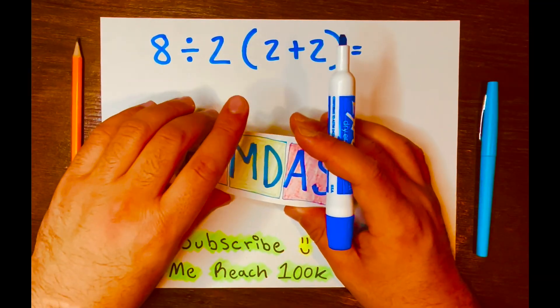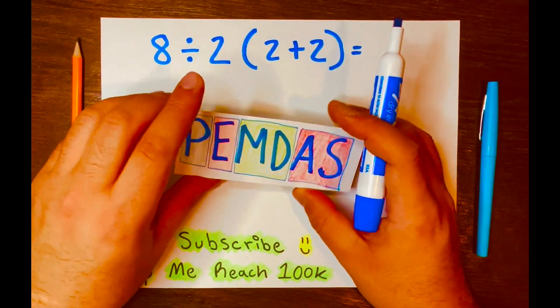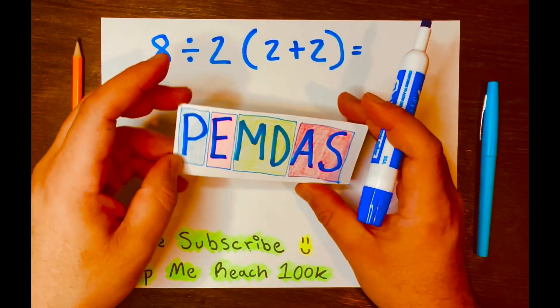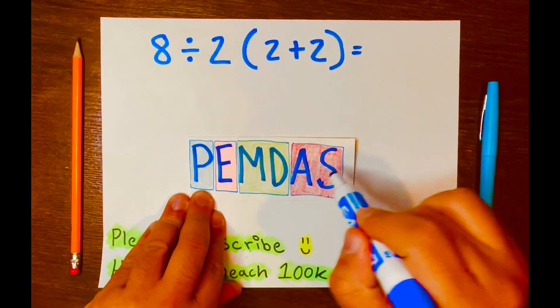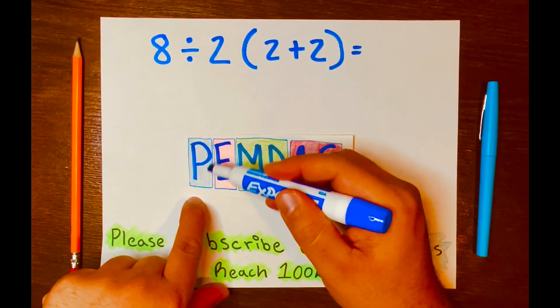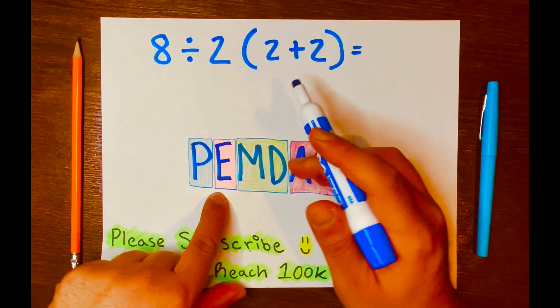And again, in my previous video, I explained the rules of PEMDAS, or how to follow PEMDAS. And PEMDAS, looking at it, P is parentheses, E is exponents...